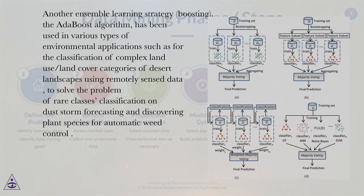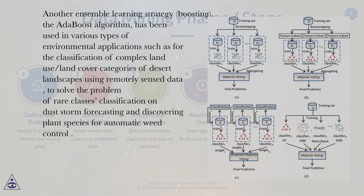Another ensemble learning strategy, boosting — the XGBoost algorithm — has been used in various types of environmental applications such as classification of complex land use/land cover categories of desert landscapes using remotely sensed data, to solve the problem of rare class classification on dust storm forecasting, and discovering plant species for automatic weed control.